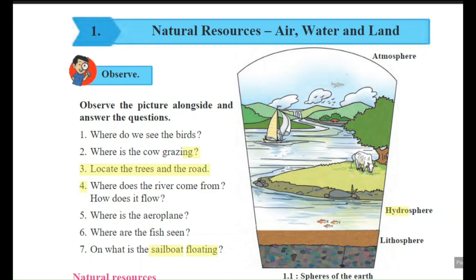Third: locate the trees and the road — you can observe trees and a road there. Next question: where does the river come from and how does it flow? The river comes from the hilly areas and its journey starts as it flows freely. Fifth: where is the aeroplane? The aeroplane is in the sky, in the atmosphere. Sixth: where are the fish seen? Fish are seen in water, that means in the hydrosphere.